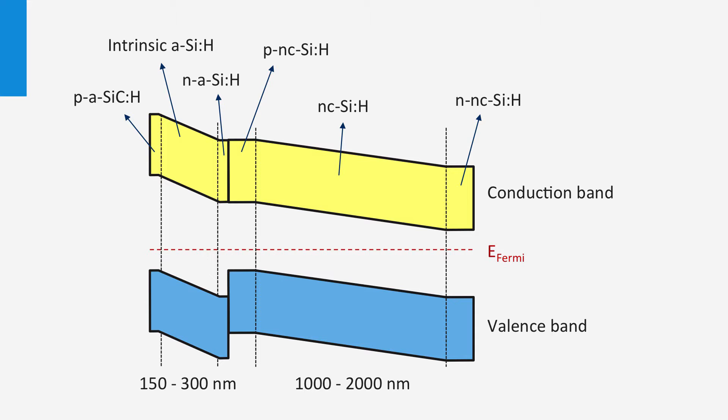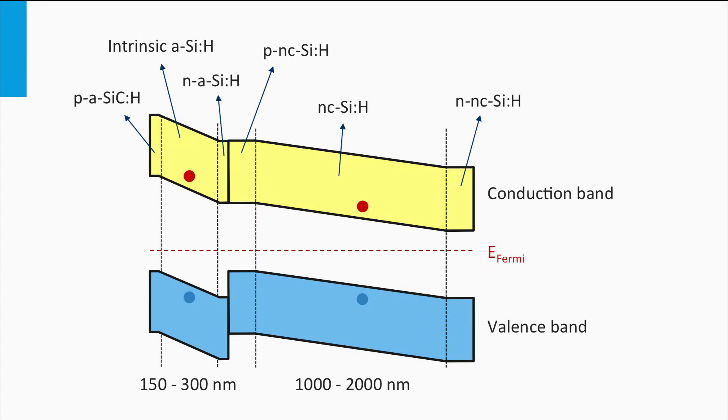Let's consider the two electron-hole pairs excited in the top and bottom cell. The hole generated in the amorphous top cell moves to the p-layer. The electron excited in the bottom cell drifts to the n-layer. Both can be collected at the front and back contacts. The electron excited in the top cell drifts to the n-layer and the holes generated in the nanocrystalline bottom cell drift to the p-layer.